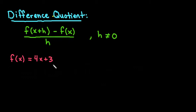Hi, for this video I'm going to show you how to use the difference quotient. The difference quotient is f(x+h) - f(x) over h, where h can be any real number except for 0.